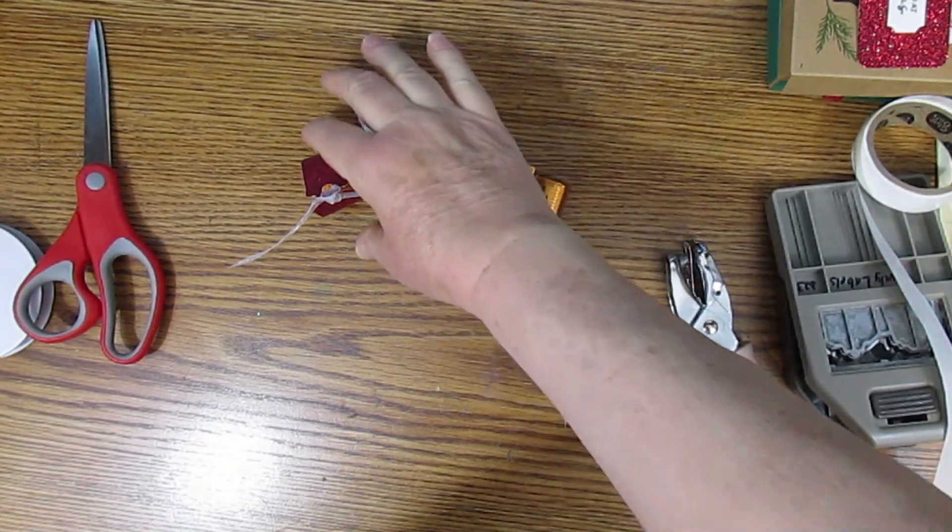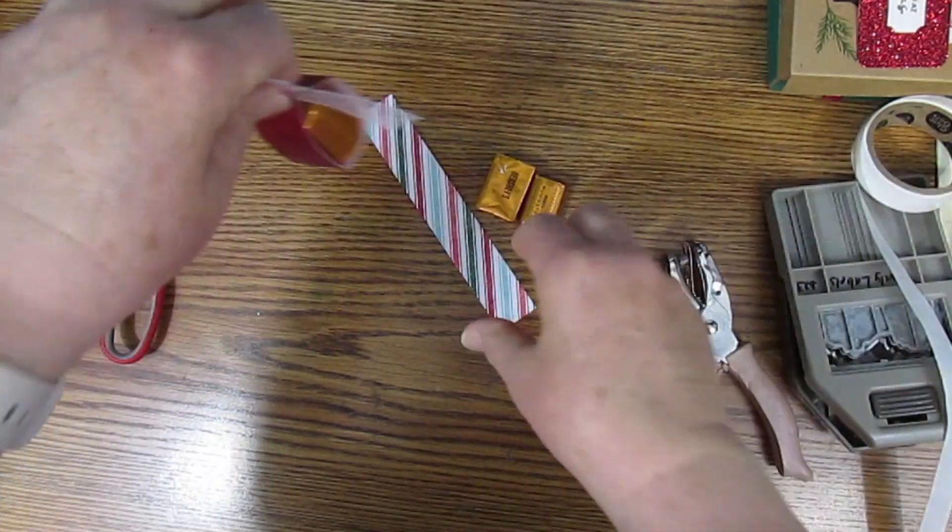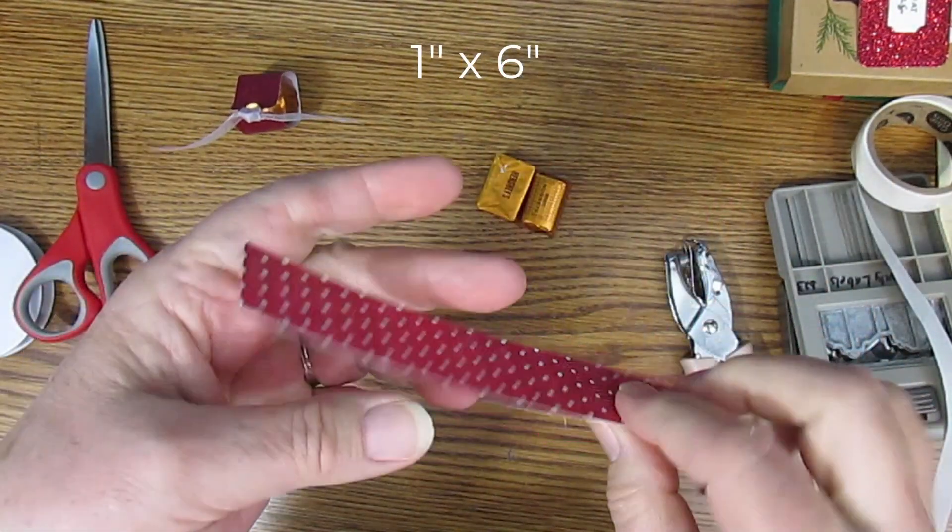Hello, this is Nindy Kerr from Nindy's Creative Corner. Today we're going to make a cute little treat holder using a one inch by six inch piece of patterned paper.